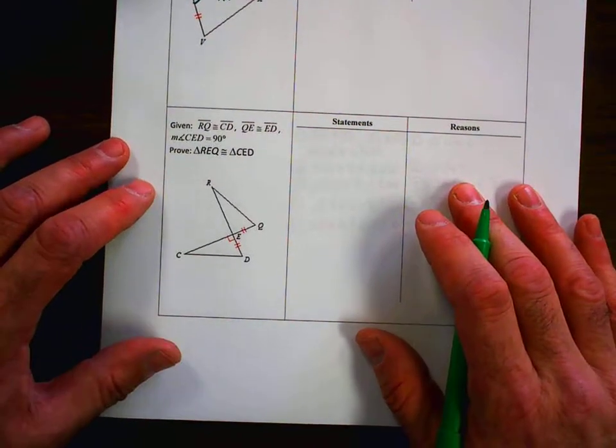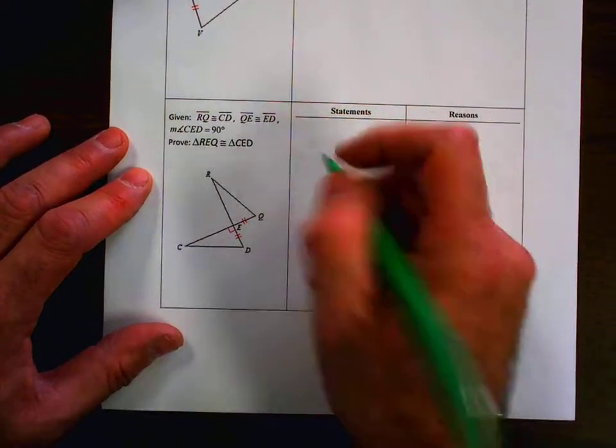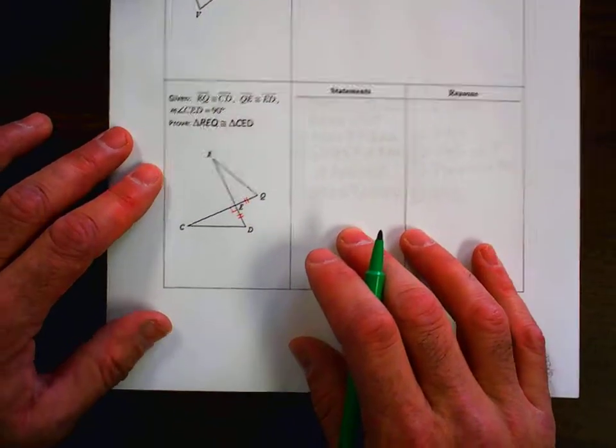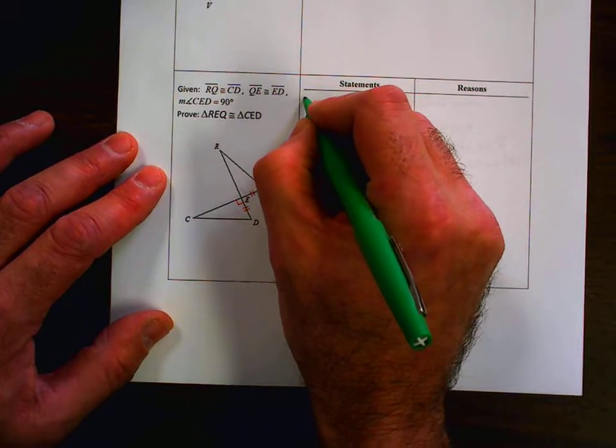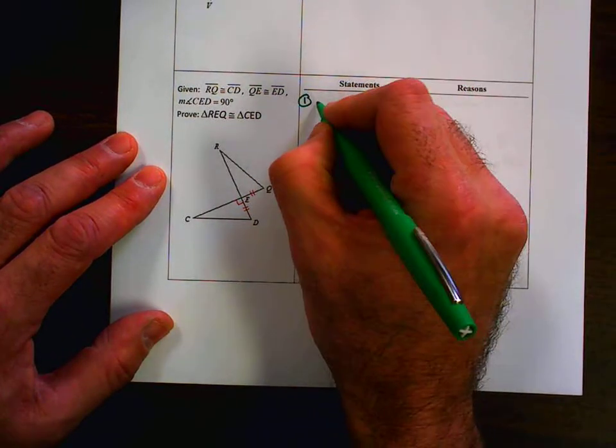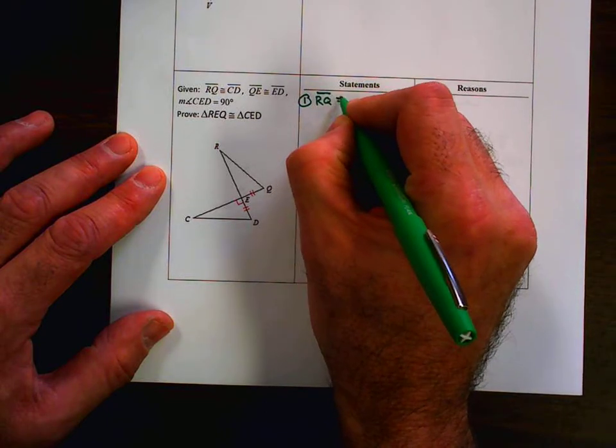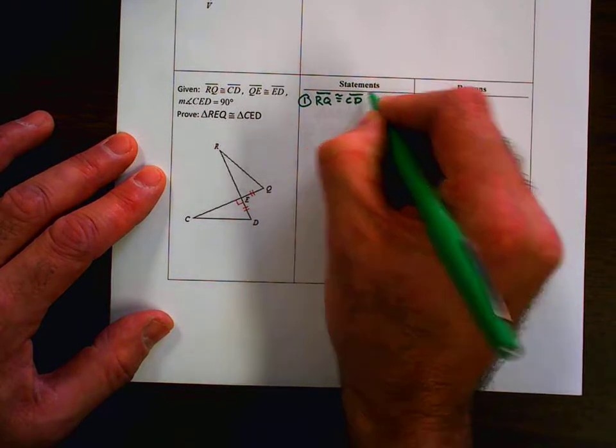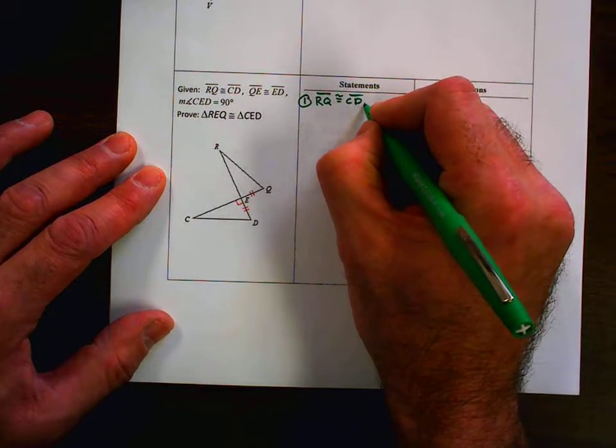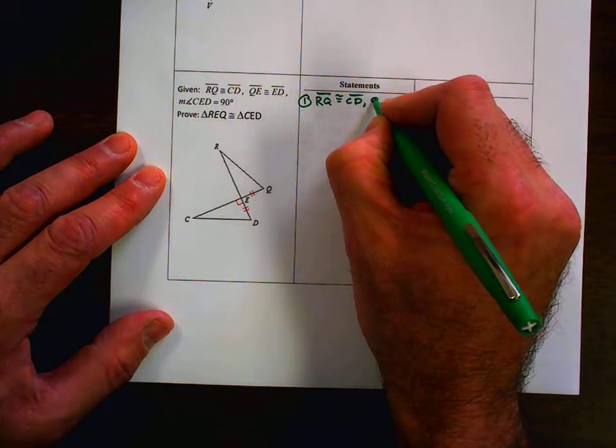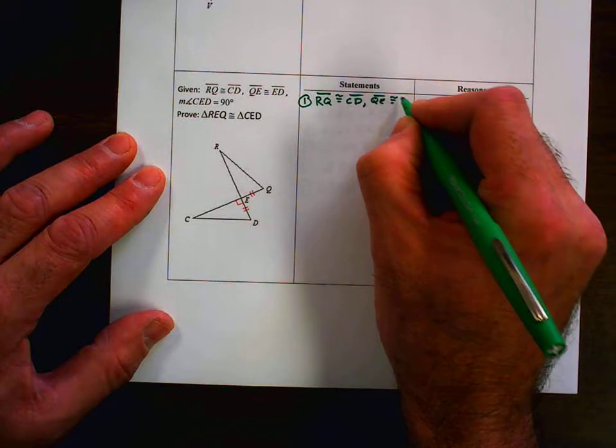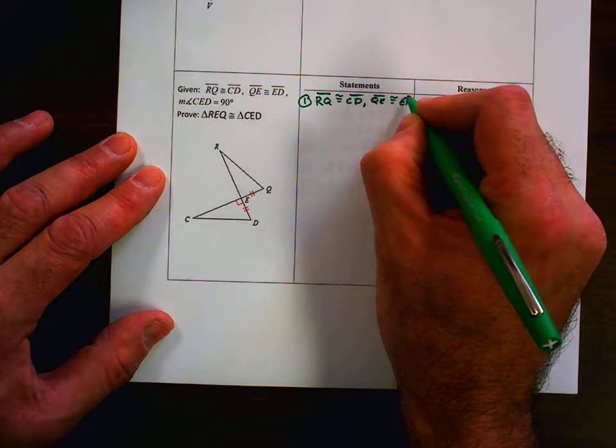The next one, we're going to use the same process. We have given information. Let's make sure we're all squared away here. Okay, number one, I'm going to say RQ. And here, we weren't given numbers, but that's okay. Sometimes I like it better that way anyway, because some people will use more steps than others, and it's not wrong or right, more wrong or more right. It's just simply a different way to do it.